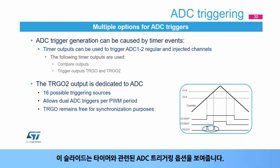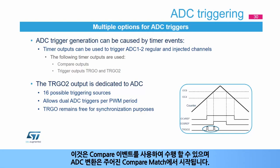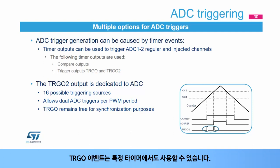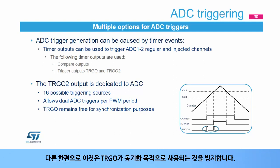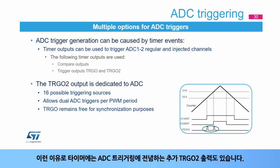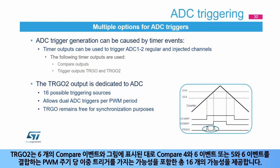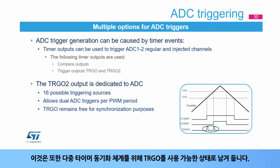The ADCs can be triggered with most STM32 timers using compare events, where the ADC conversion starts on a given compare match. The TRGO event can also be used, giving extra flexibility since TRGO can be any of the compare events or internal control signals such as register update, counter reset, or trigger input. Timers also have an additional TRGO2 output fully devoted to ADC triggering. TRGO2 offers 16 possibilities, including 6 compare events and the possibility to have a dual trigger per PWM period by combining compare 4 and 6 events, or compare 5 and 6 events. This leaves the TRGO free for multiple timer synchronization schemes.